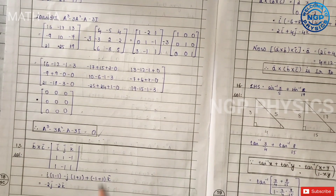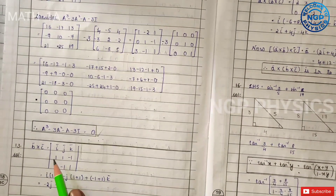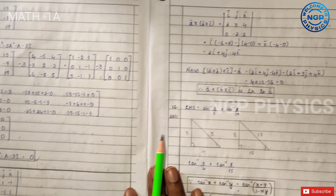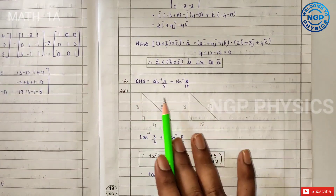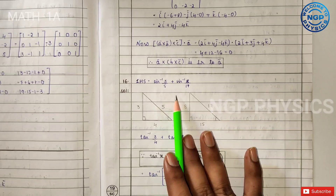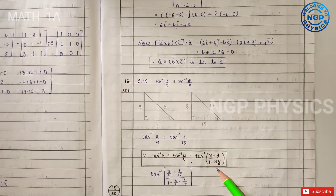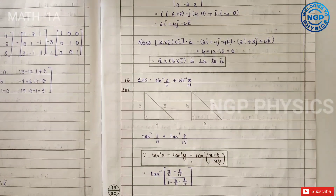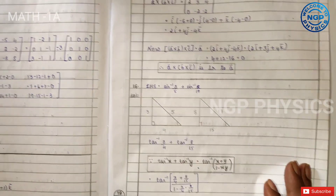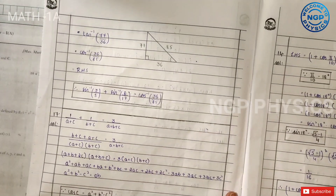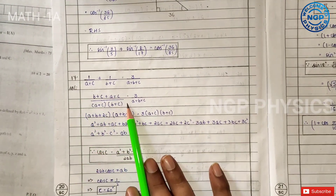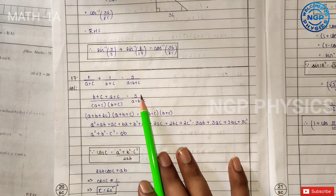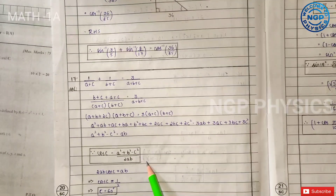Next, the 2nd SAQ — question number 13. Next, the 3rd SAQ — question number 16 — on inverse trigonometric functions. Remember the formula and note it clearly. Next, the 4th SAQ — question number 17 — on Properties of Triangle. Use the formula and note it carefully.